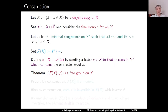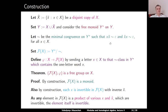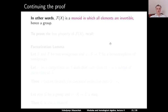Theorem: the pair F(X), φ defined above is a free group on X. This theorem is more complicated because we don't even know yet whether F(X) is a group. Proof: by construction, F(X) is a monoid. Also by construction, each element x in F(X) is invertible with inverse x̃, because the congruence ~ contains the relations which mean exactly that x̃ is the inverse of x. Any element of F(X) is a product of x's and x̃'s, and all these elements are invertible, so each element of F(X) is invertible. Thus F(X) is a group.